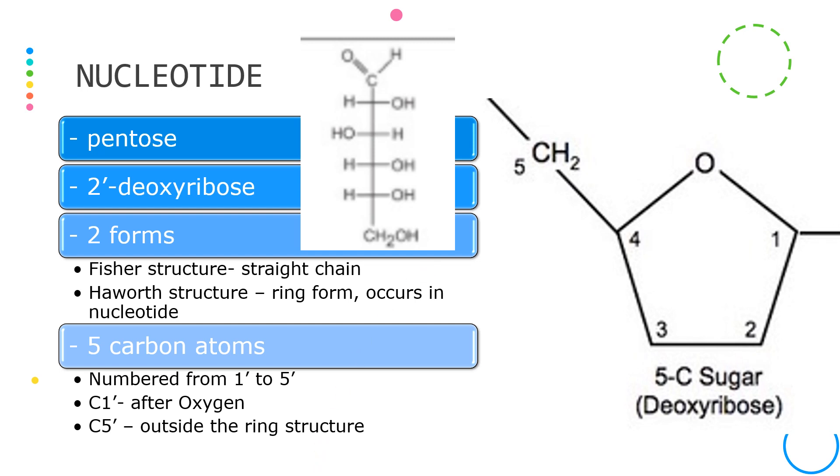They are not just called 1, 2, 3, 4, 5 but they are numbered as 1 prime, 2 prime, 3 prime, 4 prime, and 5 prime.